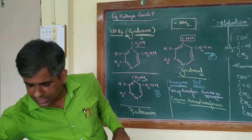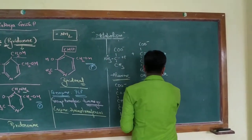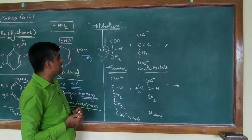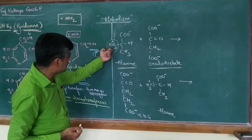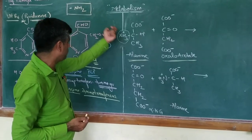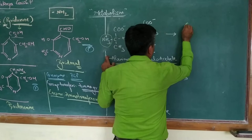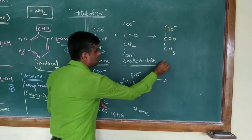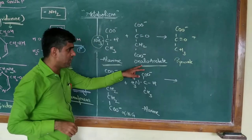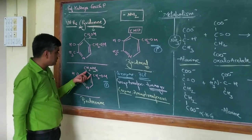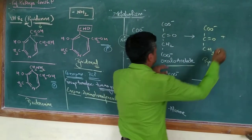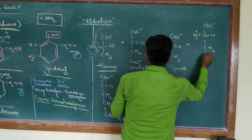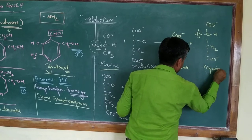For a specific example: we have the amino acid alanine and the keto acid oxaloacetate. The aminotransferase enzyme takes the amino group from alanine — pyridoxal phosphate accepts this amino group and gets converted to pyridoxamine phosphate, while alanine is converted to pyruvate. Then oxaloacetate accepts the amino group from pyridoxamine phosphate and is converted to aspartate. So an amino acid — aspartate — is formed, and there is a net transfer of the amino group.